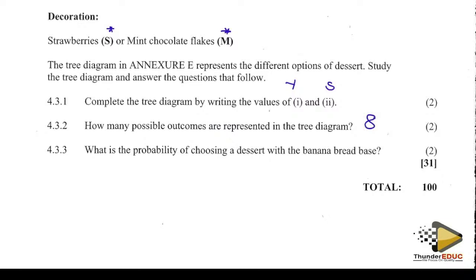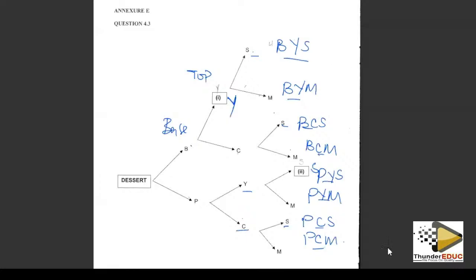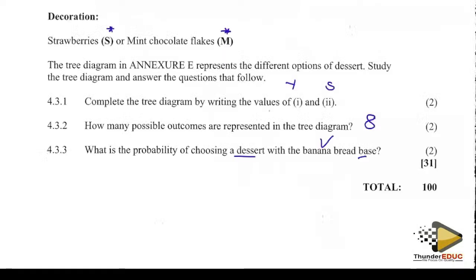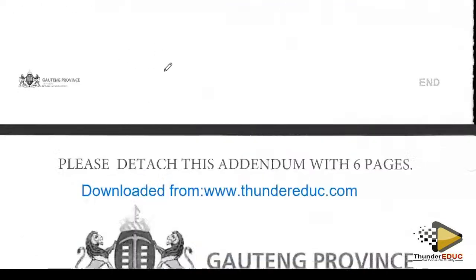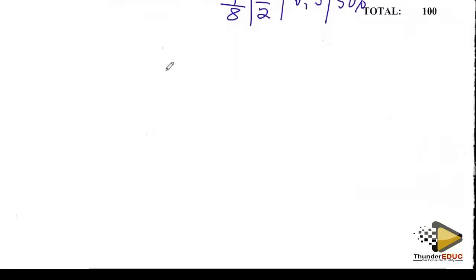Out of the eight outcomes, what is the probability of choosing a dessert with a banana base? Looking at which ones start with B: one, two, three, four — so four out of eight. Simplified, that is one half (½). As a decimal it would be 0.5, or as a percentage 50%. This marks the end of our solution.